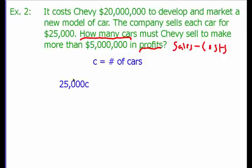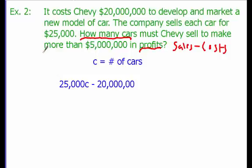If they sell one car they make $25,000; two cars, $50,000; three cars, $75,000, and so on. We subtract our costs of $20 million. The phrase "more than $5 million" tells us to use the greater than symbol. So our inequality is: 25,000C − 20,000,000 > 5,000,000.